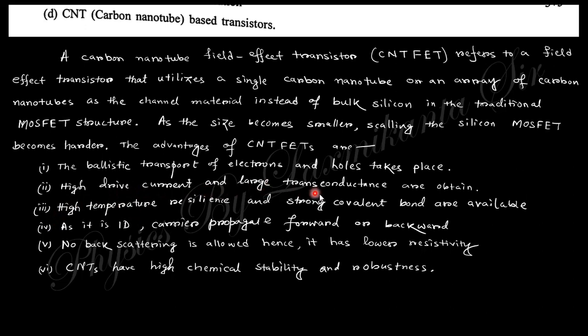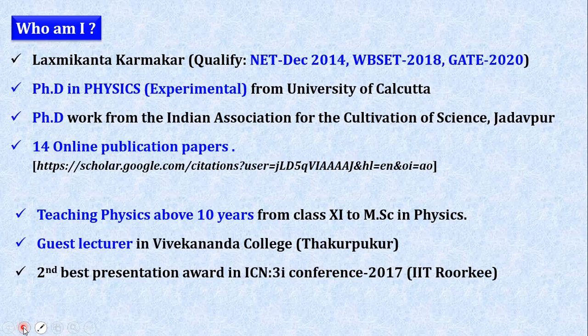High device current and large transconductance are obtained, along with high temperature tolerance and strong covalent bonds. As it is one-dimensional, carriers propagate only forward and backward. There is no backscattering allowed, so it has lower resistivity. CNTs have high chemical stability and robustness. That's it for today - we will discuss the next question in the next video.